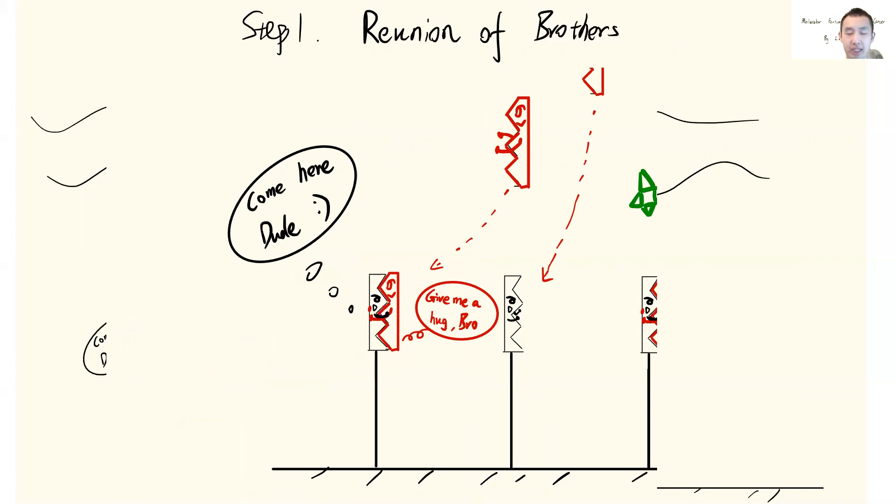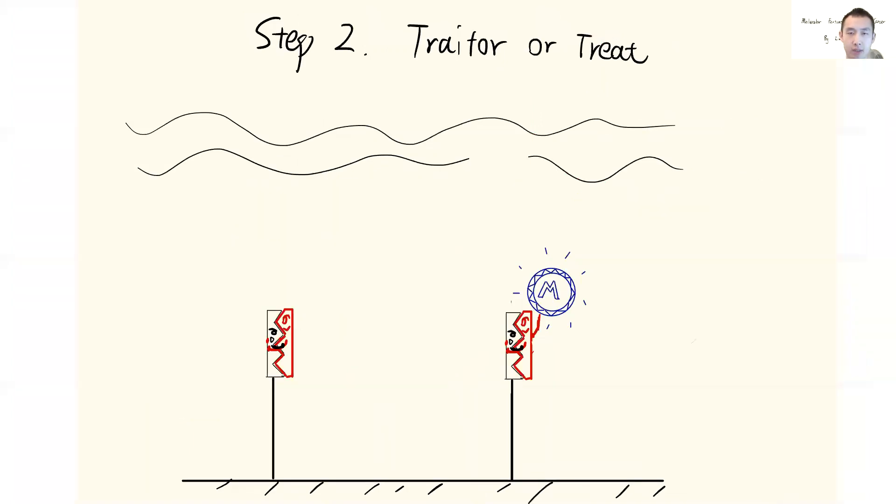So once they meet together, there is some interesting conversation going on between these two brothers, which is our second step, traitor or treat. Mr. Black is expecting something from Mr. Red. He says, hey bro, do you have that thing? Mr. Red feels confused. What about what? And Mr. Black feels unhappy and says, just get out of my way.